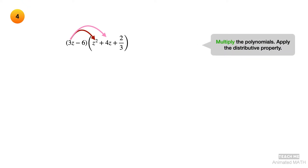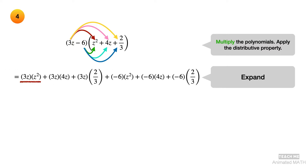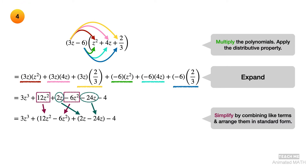Apply the distributive property when you multiply the polynomials. Expand the product — each colored arrow is matched with an underline of the same color. Simplify the polynomial product by combining like terms and arrange in standard form. The final answer is 3z cubed plus 6z squared minus 22z minus 4.